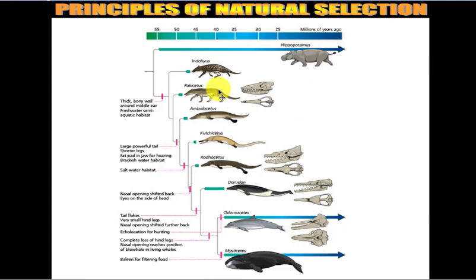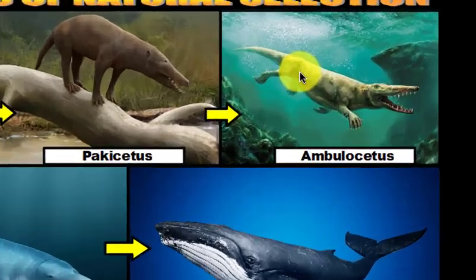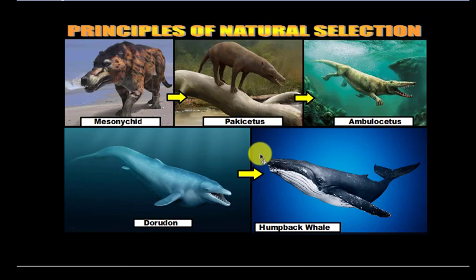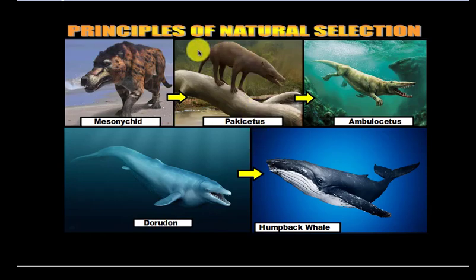Another trait is hair. Hair decreases and eventually vanishes by the time Dorudon and modern whales appear. Mesonychid is covered in hair — it lives on land and needs it to trap heat. Pachocetus still spent a lot of time on land, so it still needed hair to maintain heat. However, Ambulocetus has practically none, except some whiskers on the snout, and Dorudon has zero hair. Modern whales have essentially no hair either. Like Olympic swimmers who shave their bodies to become more streamlined, body hair causes friction with water that slows you down. So hair disappears over time to increase the speed of these organisms.